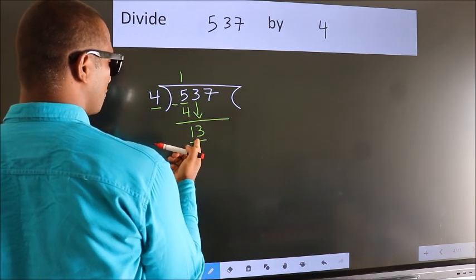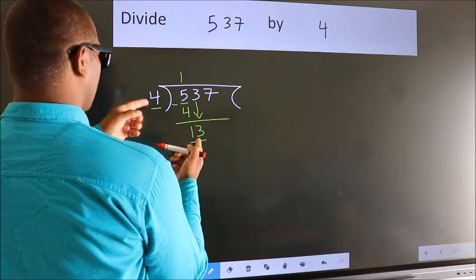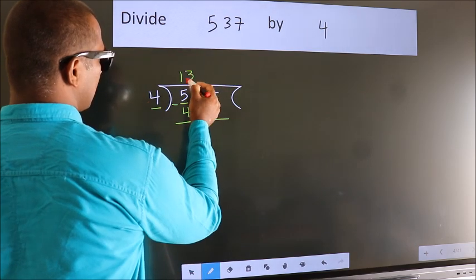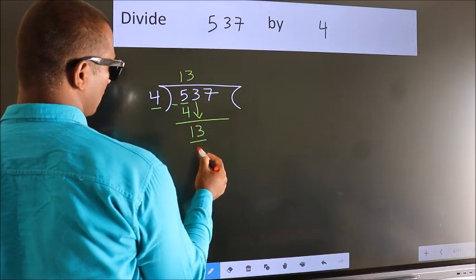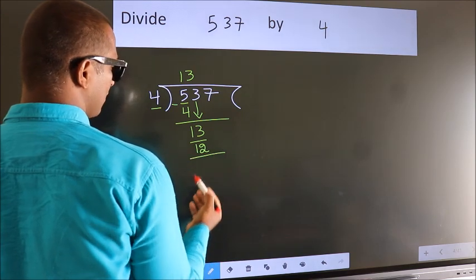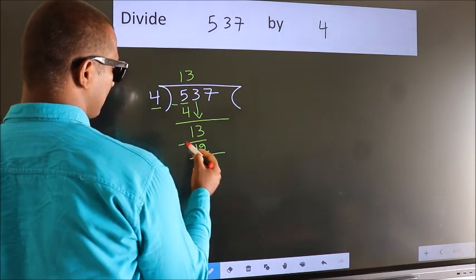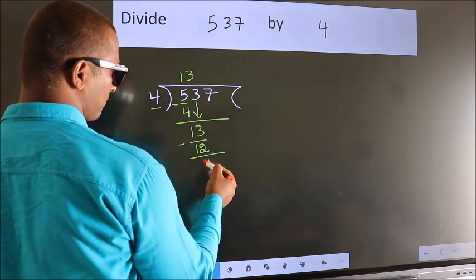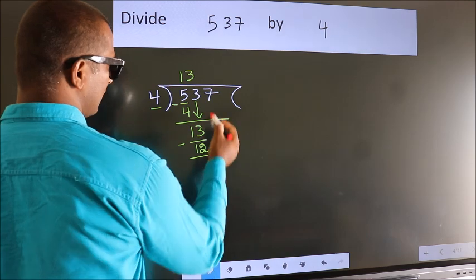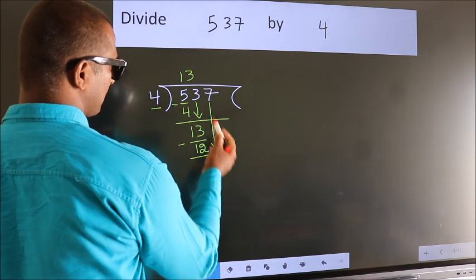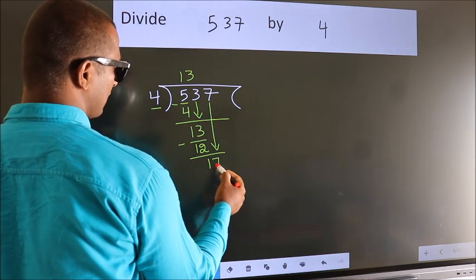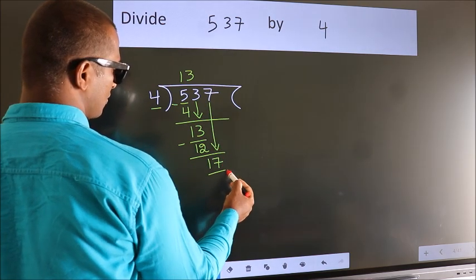A number close to 13 in the 4 table is 4 threes — 12. Now we subtract — we get 1. After this, bring down the beside number. So, 7 down. So, 17.